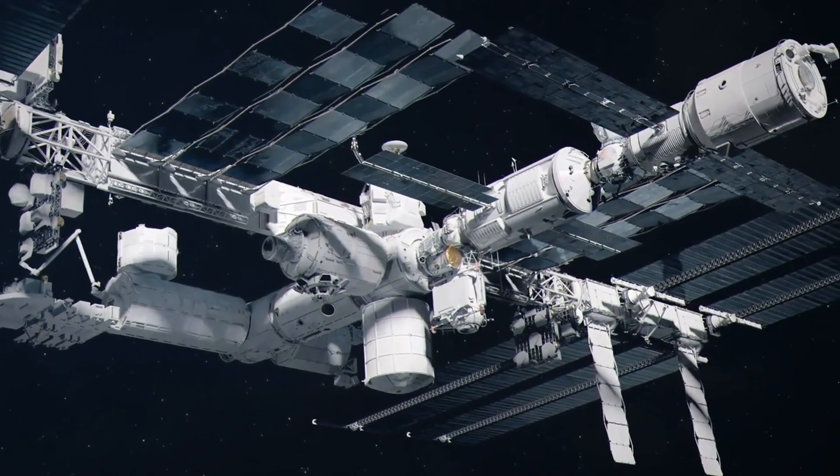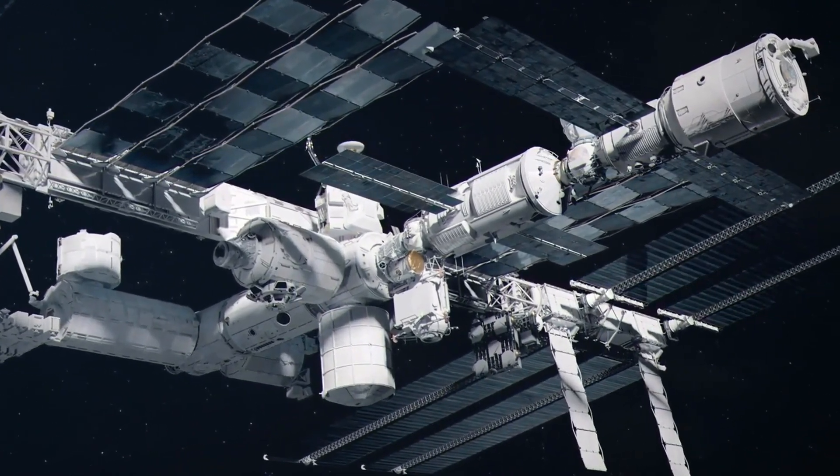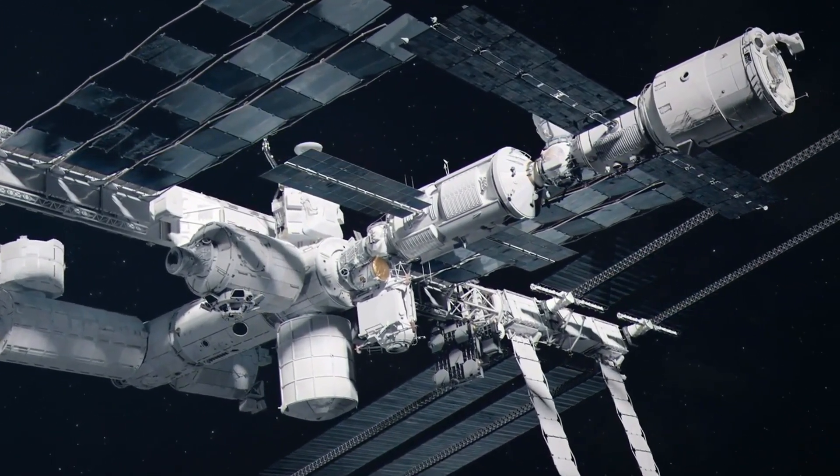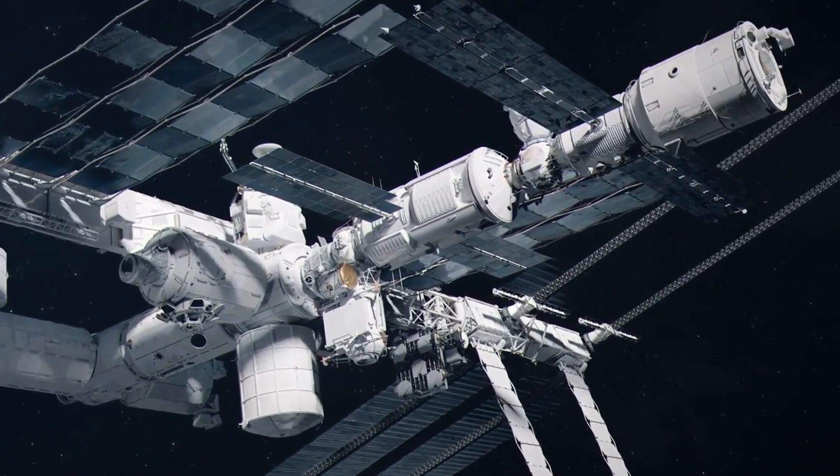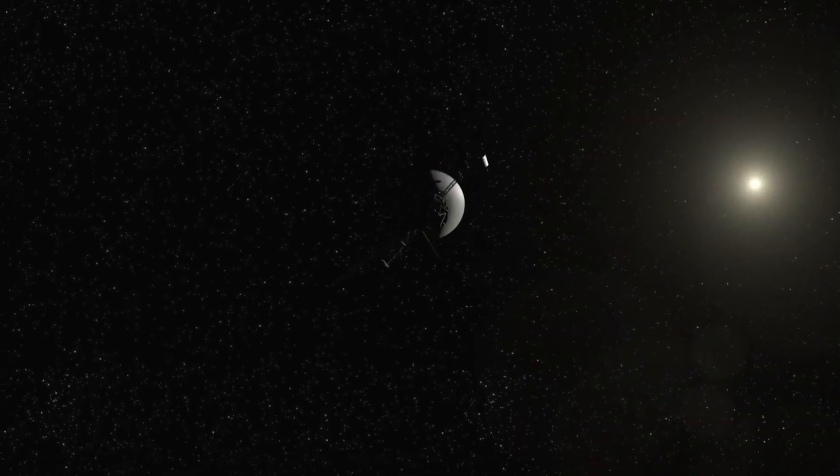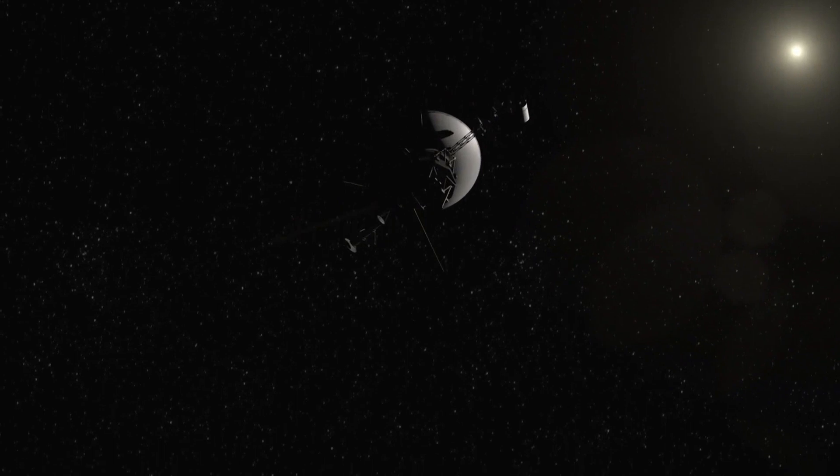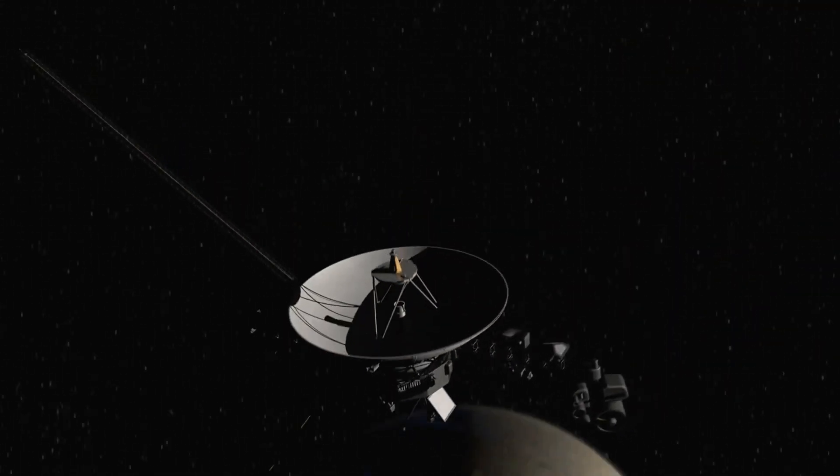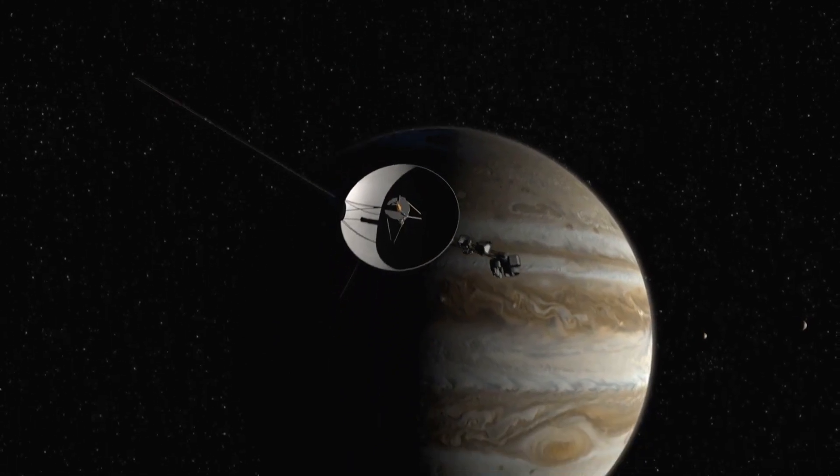Even with all our fancy space tech, it's still pretty much impossible for us to visit Alpha Centauri anytime soon. Just think about it. If the Voyager spacecraft, which moves pretty fast at 38,000 miles per hour, tried to get there, it would take over 70,000 years. Yeah, mind-blowing.